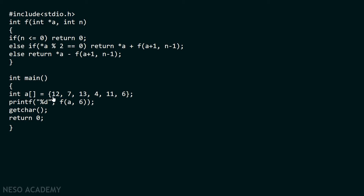Within the main function, we can see we have an array A which contains six elements: twelve, seven, thirteen, four, eleven, six. After this statement, we are calling the printf function, and within that we are calling another function F. We are passing the address of the first element of this array — because the name of the array indicates the address of the first element — and also passing the value six. This address will be passed to pointer A and the value six will be passed to variable N. Please don't confuse this pointer A with the array name A; they are both different. This pointer is local to function F while the array is local to main.